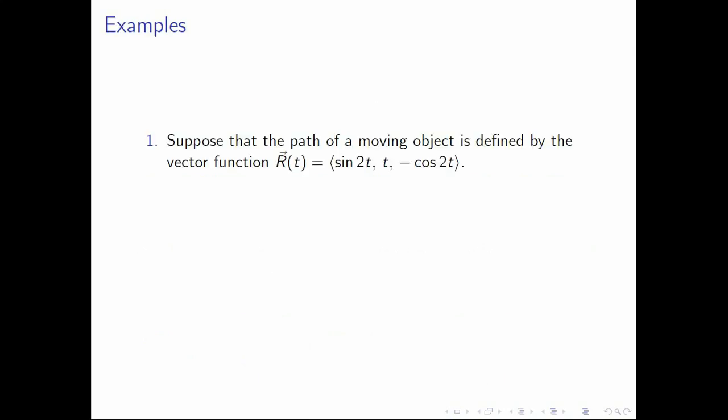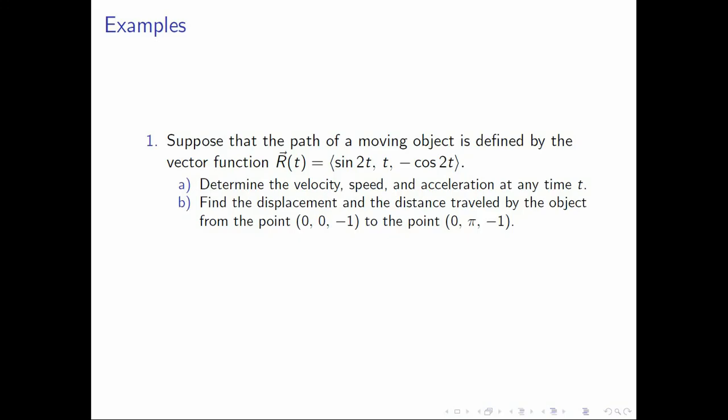Let's start with this one. Suppose that the path of a moving object is defined by the vector function r of t equals sine 2t, t, negative cosine 2t. We are asked to determine the velocity, speed, and acceleration at any time t. We are also asked to find the displacement and the distance traveled by the object from the point (0, 0, negative 1) to the point (0, 0, negative 1). And finally, we are asked to find the scalar tangential and normal components of the acceleration when t is pi over 4.